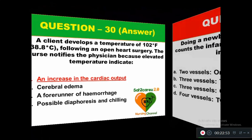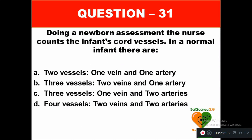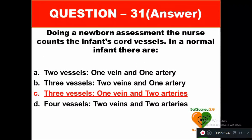Question 31: During a newborn assessment, the nurse counts the infant's cord vessels. In a normal infant there are: option A two vessels (one vein and one artery), option B three vessels (two veins and one artery), option C three vessels (one vein and two arteries), option D four vessels (two veins and two arteries). The right answer is option C — three vessels: one vein and two arteries are present in the infant's cord vessels.